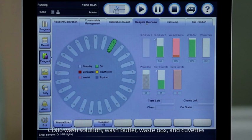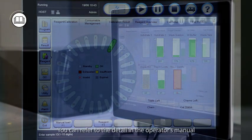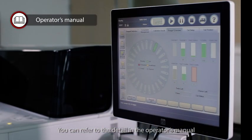Substrate, CD80 wash solution, wash buffer, waste box, and cuvettes. The status is indicated by different colors and marks on the icon. You can refer to the detail in the operator's manual.